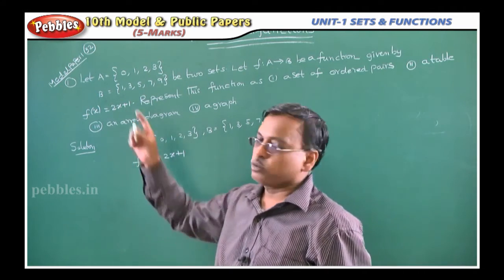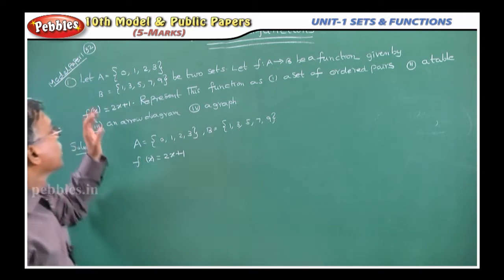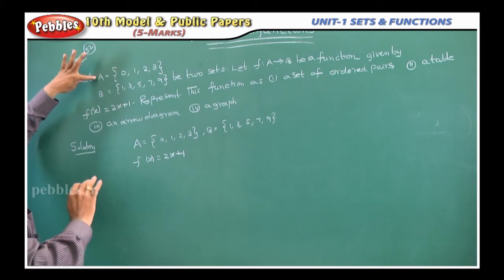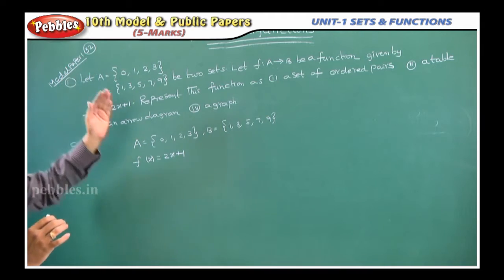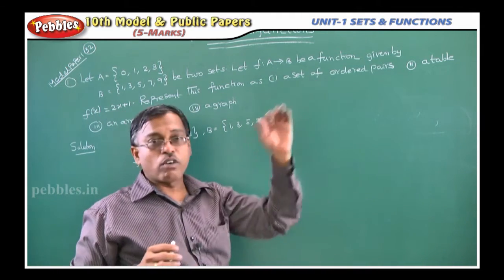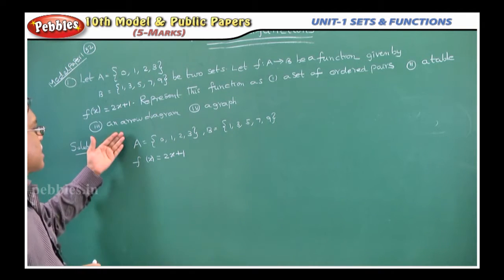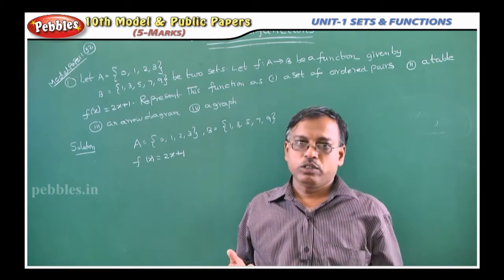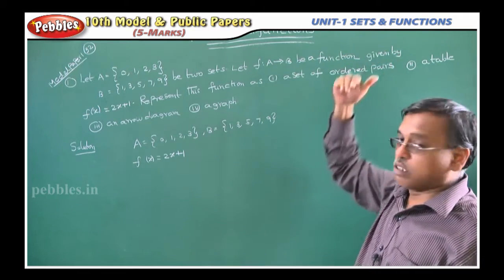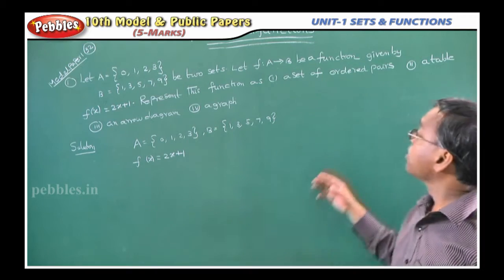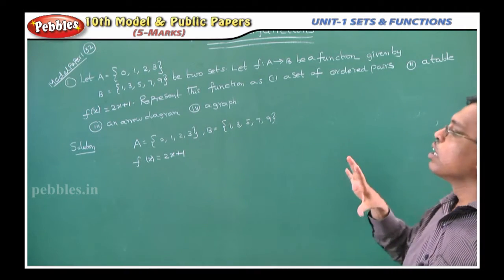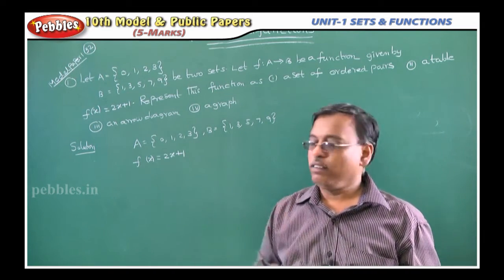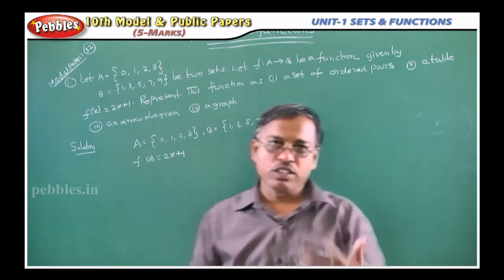What is the use of this? You can calculate the image of each and every element present in set A, because a function is defined always from set A to set B. Now, represent this function as a set of ordered pairs, next a table, next an arrow diagram, next a graph. There are so many ways to represent a function. We will see them one by one.